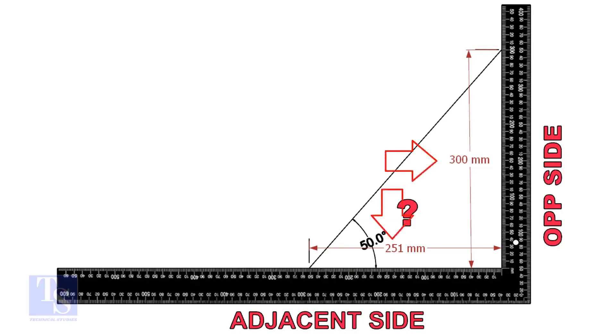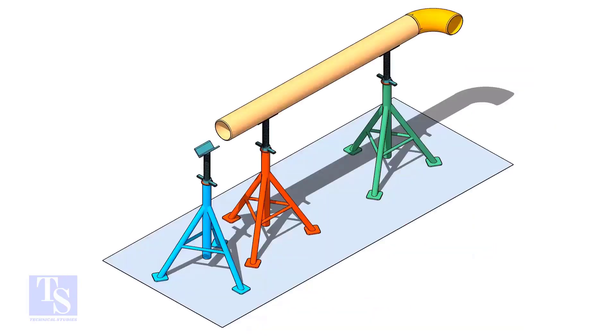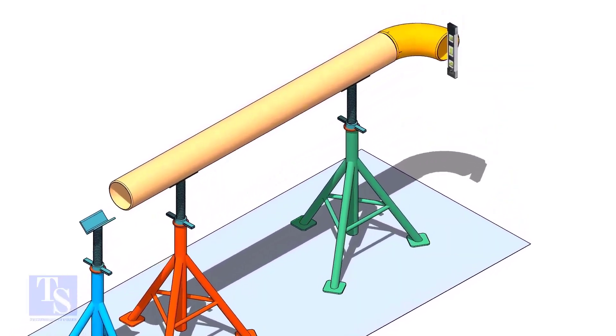Mark these dimensions on a large right angle, as shown. Level the pipe, and the elbow that is already fitted on the pipe.